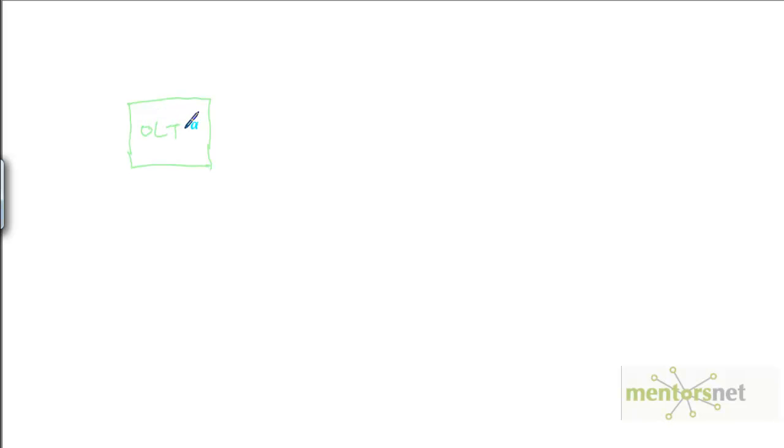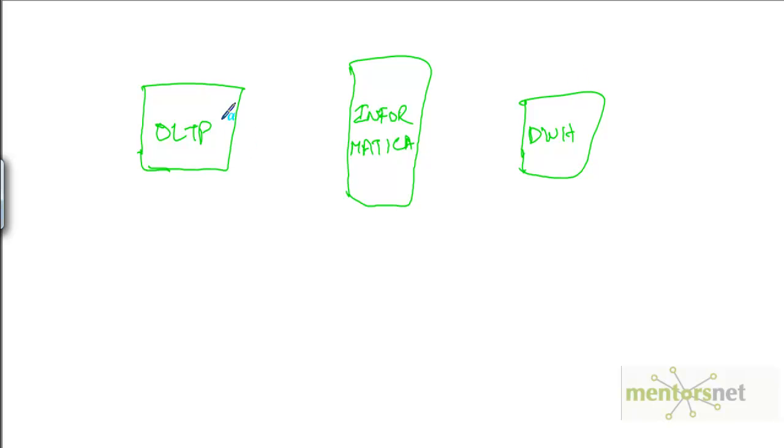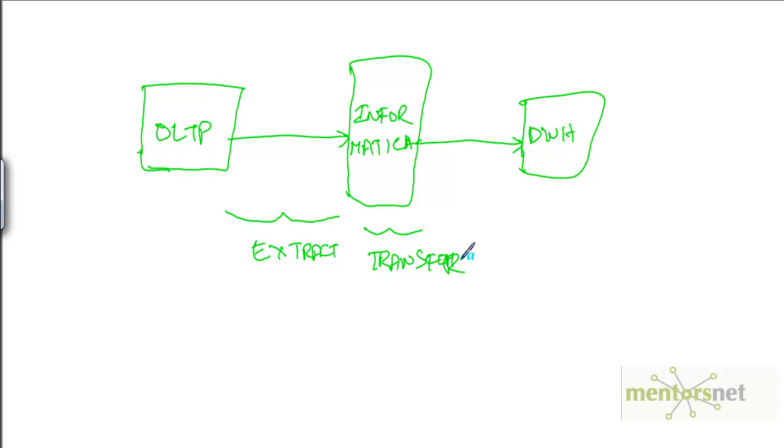In this video we will see what is ETL and what are Informatica Power Center components. ETL is Extract, Transform and Load. In order to move the data from the OLTP system to a data warehouse, we have a source system which is OLTP, Informatica in the middle transforming the data, and a data warehouse. Data flows like this — this part is called Extract.